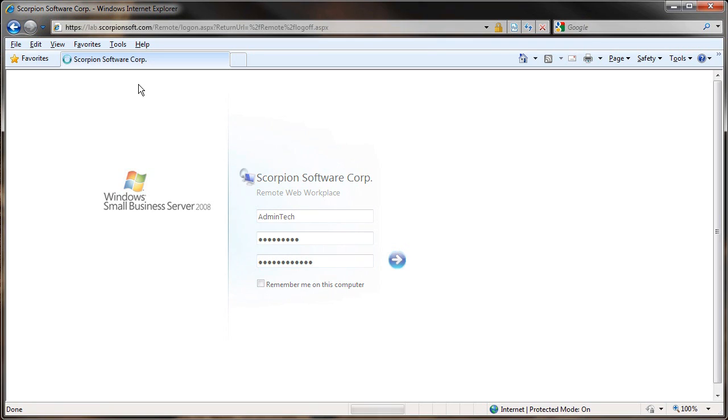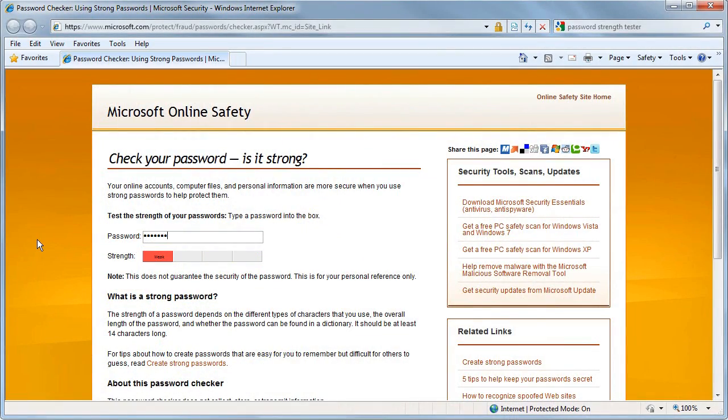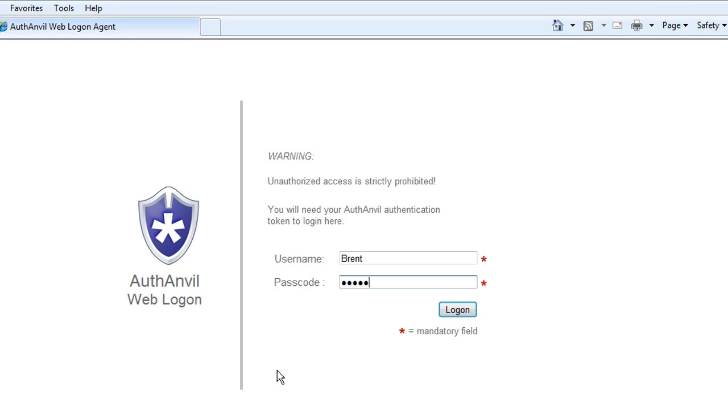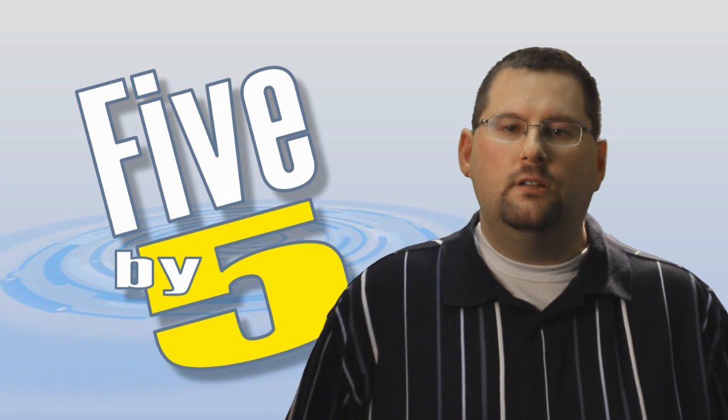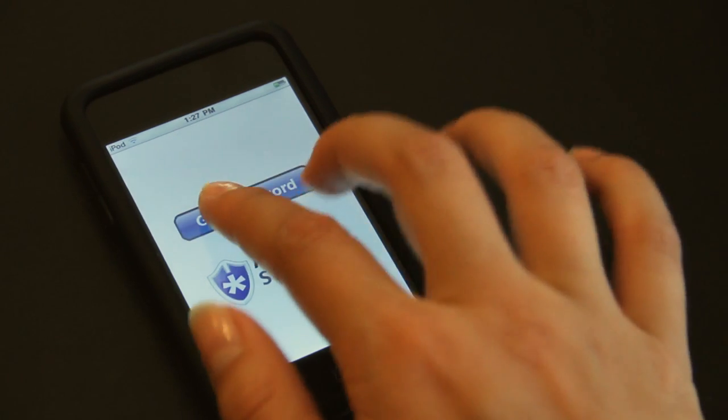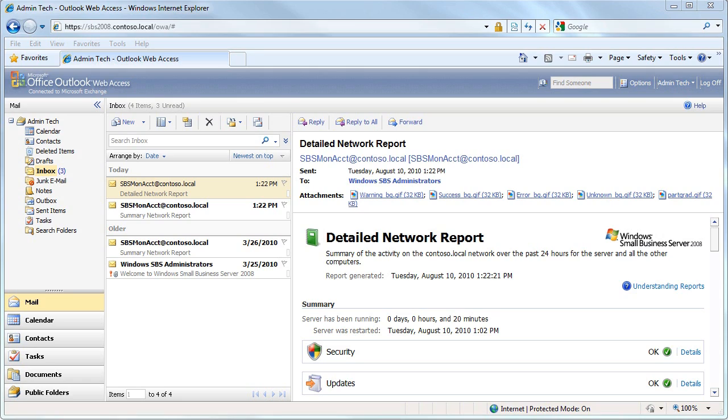So as you can imagine, we want to make sure that such information stays protected. The last thing we want are for adversaries to gain access to this sensitive information because someone used a weak password or cached it on an untrusted PC. There are a couple ways that you can handle this within Authenvil. First, you can deploy the Authenvil Web Logon Agent to protect Outlook Web Access directly. In this configuration, users will not be able to log into their webmail until they first provide evidence of who they are with an Authenvil passcode. Once they do this, they'll experience Outlook Web Access just like they did before.